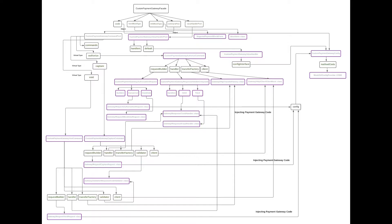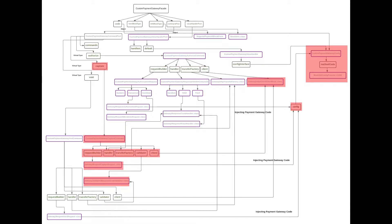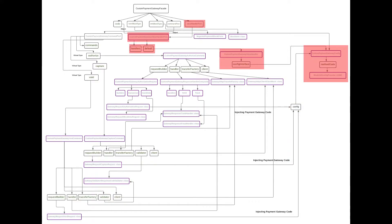I have created this image to understand the classes and the virtual type flow in a better way. Please note that this is not an actual flow of classes. Our custom payment gateway facade holds five arguments: the code argument defines the code for our payment gateway; form block type represents the block class responsible for payment form rendering; info block type represents the block class responsible for transaction or payment information rendering; command pool is a set of gateway commands available for integration with a particular payment provider, consisting of requests like authorize, capture, and void; and value handler pool allows us to set payment configuration based on certain conditions.